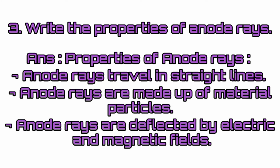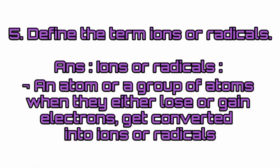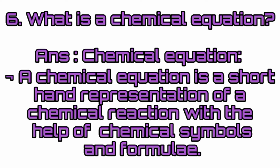Write the properties of anode rays. Properties of anode rays: anode rays travel in straight lines; anode rays are made up of material particles; anode rays are deflected by electric and magnetic fields. Define valency of an element with respect to hydrogen. Answer: Valency of an element can also be defined as the number of hydrogen atoms which combine with one atom of it. Define the term ions or radicals. Answer: An atom or a group of atoms, when they either lose or gain electrons, get converted into ions or radicals.